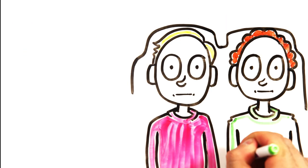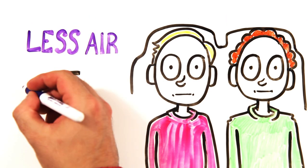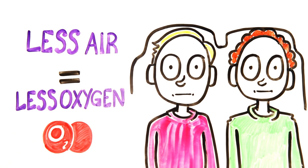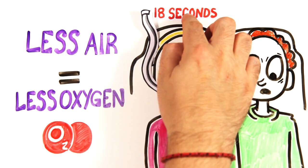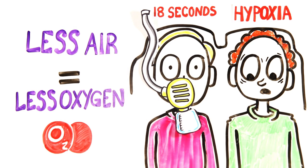Because the air is substantially thinner at high altitudes, there is substantially less oxygen. A gradual decompression in the cabin will cause the oxygen mask to drop from above, and on average, you have 18 seconds to put the mask on before hypoxia kicks in.